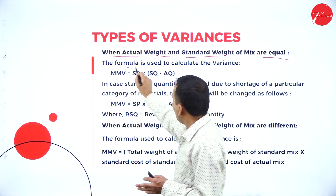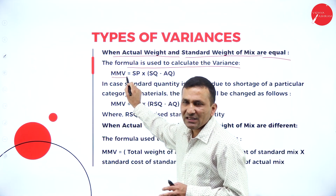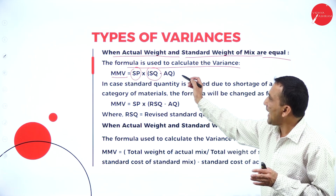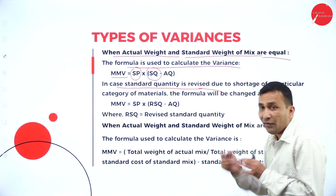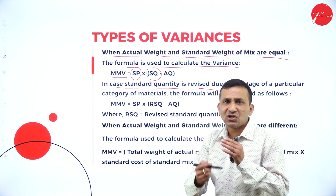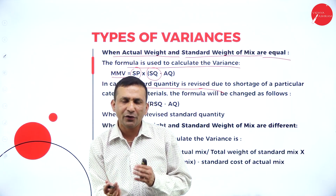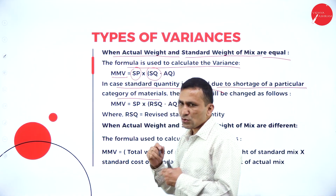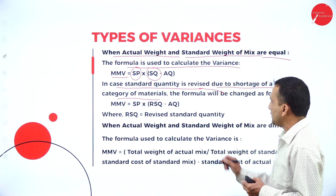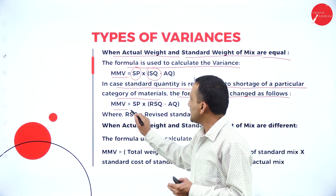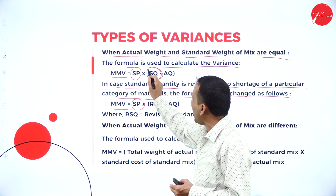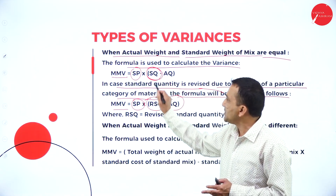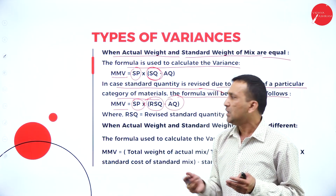When the actual weight and standard weight of the mix are equal, the formula is: MMV = Standard Price × (Standard Quantity − Actual Quantity). In case the standard quantity is revised — the management can revise the standard due to shortage of a particular category of materials — the formula changes: MMV = Standard Price × (Revised Standard Quantity − Actual Quantity).